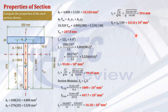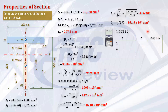Now we'll solve this faster using the same principle but with the statistics mode of a calculator such as the Casio 991 or 570. Press Mode 3, then 2 for linear (ax + b), and make sure the frequency column is turned on. In the frequency column we input the area; in y we input the centroid; and in x we input the ratio of moment of inertia to area (I/A). For a rectangle, I/A equals d²/12.